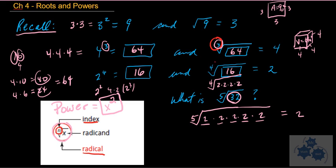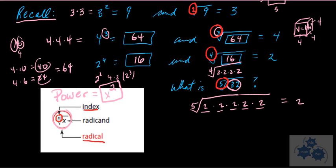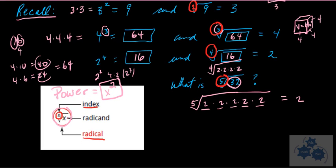We wouldn't have a root with an index of 1, because that would just be the number itself. The number underneath the radical sign — whatever number, letter, or expression is there — is called the radicand.